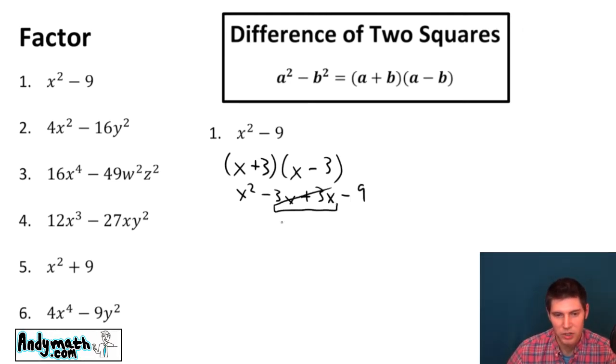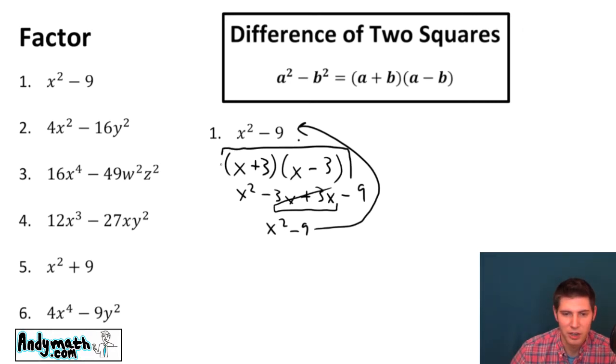So these middle terms cancel. So we're left with just x squared minus nine which is where we were when we started. So we know that this x plus three x minus three is correct. Let's do some more.